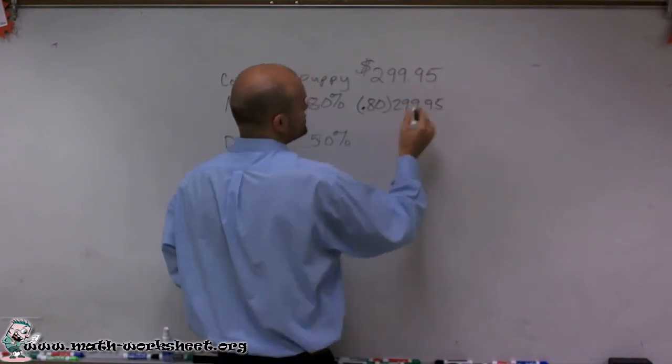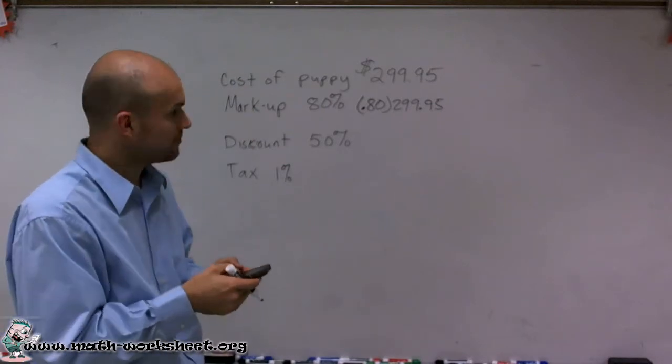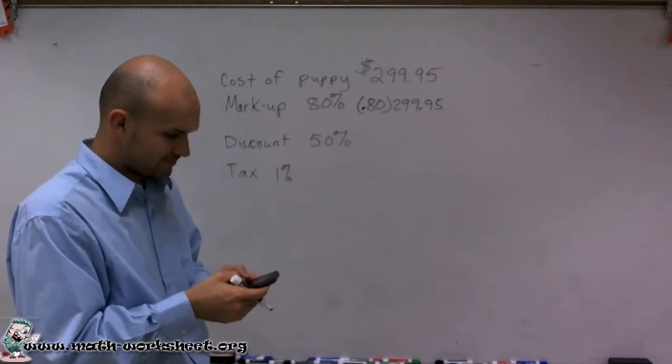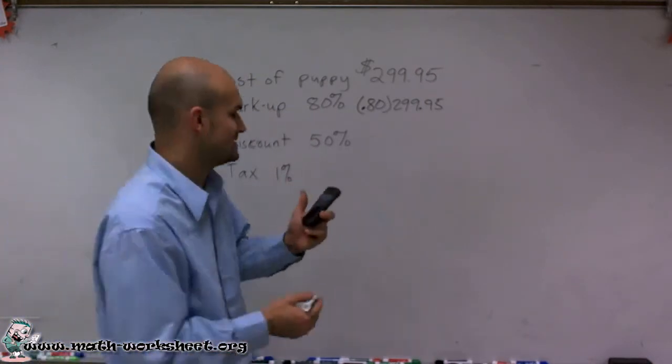So when I multiply my price times our markup, we're going to have times 0.80, and I'm going to get $239.96.